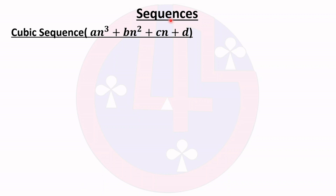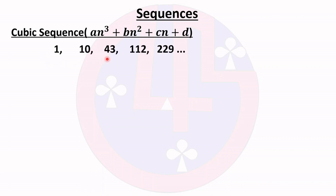Here we are discussing cubic sequences. The general format is an³ plus bn² plus cn plus d. We can take one example: the sequence 1, 10, 43, 112, 229.